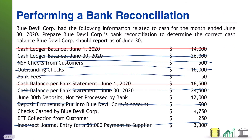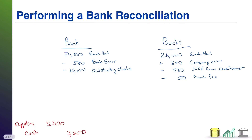Next: June 30th deposits not yet processed by the bank. This could be a situation where June 30th was a weekend and we sent some deposits, but the bank hasn't processed them yet. This is known as a deposit in transit. We know we made the deposit, but the bank balance doesn't include it yet. So we add $12,000 to the bank side — deposits in transit — because it will get into the bank balance once the bank processes it.